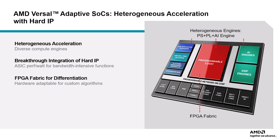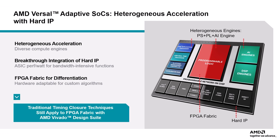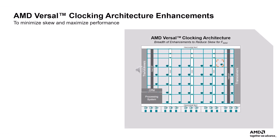The FPGA fabric is the muscle behind the Versal architecture and provides bit-level compute solutions. There is also a broad range of connectivity and processing hard IPs, ranging from gigabit networking cores to integrated RF for wireless, radar, and test and measurement, to video processing for edge applications. Though Versal is a considerable architectural shift from previous generations, traditional timing closure techniques still apply for FPGA fabric with AMD Vivado Design Suite.